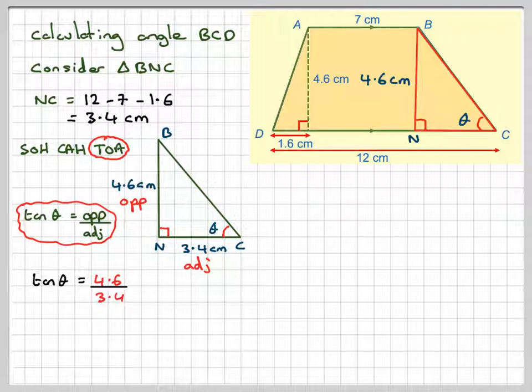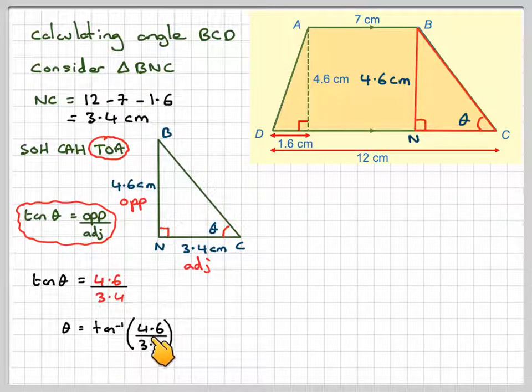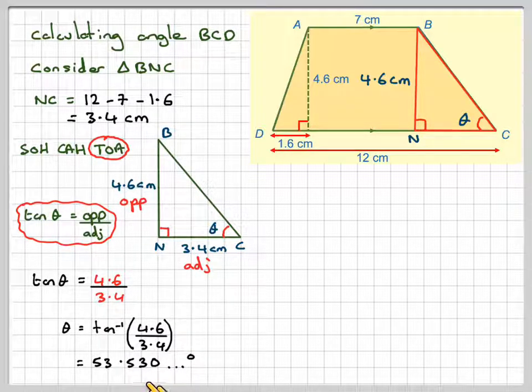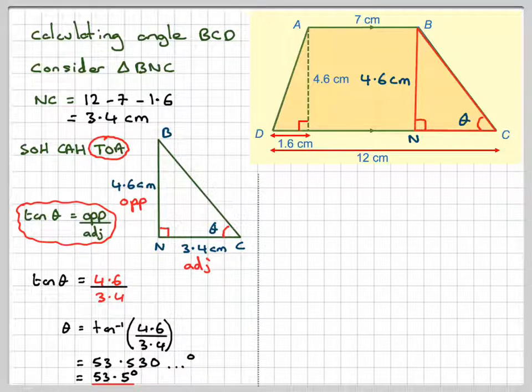Sorry, I need to correct myself. It's opposite over adjacent. So it's 4.6 over 3.4. So theta will be tan to the minus 1 of 4.6 over 3.4. So it's inverse tan on our calculator. That gives an angle of 53.53 degrees, which is 53.5 degrees.